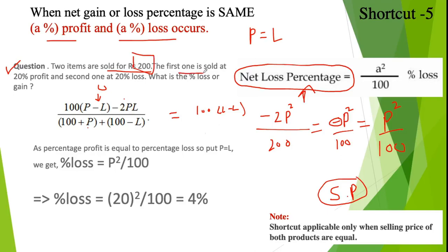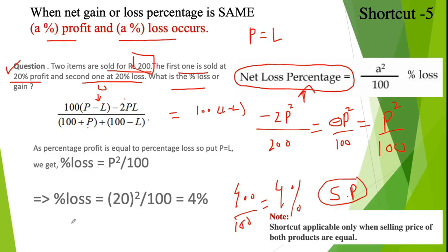Example: Two products are sold at the same price — first one at 20% profit and second at 20% loss. What is the net percentage loss or gain? Since P equals L equals 20, we calculate 20² over 100, which equals 400 over 100, equal to 4%. So the net result is a 4% loss in this overall transaction.